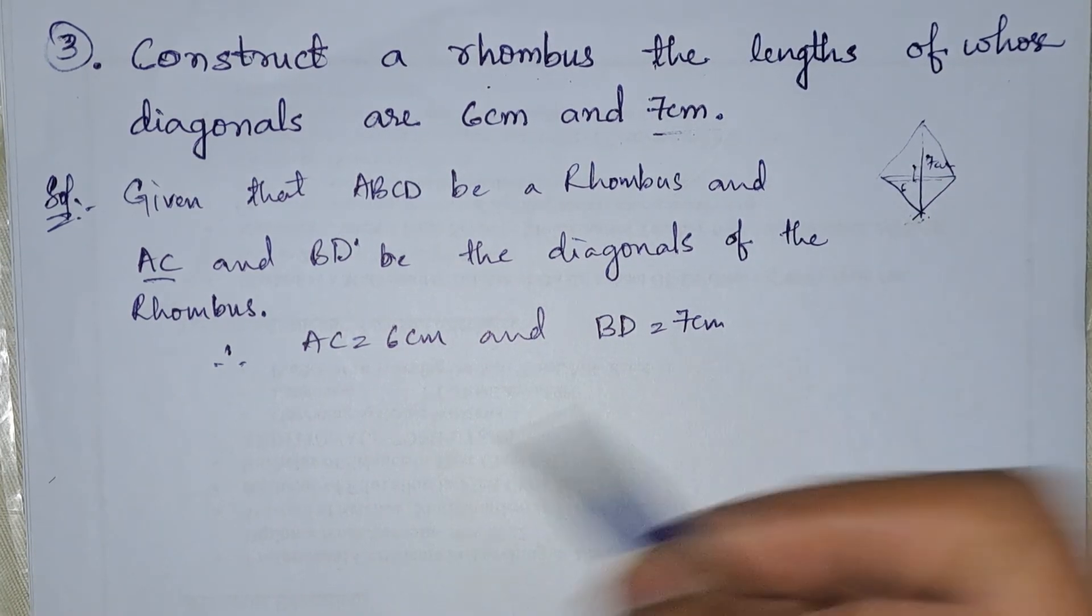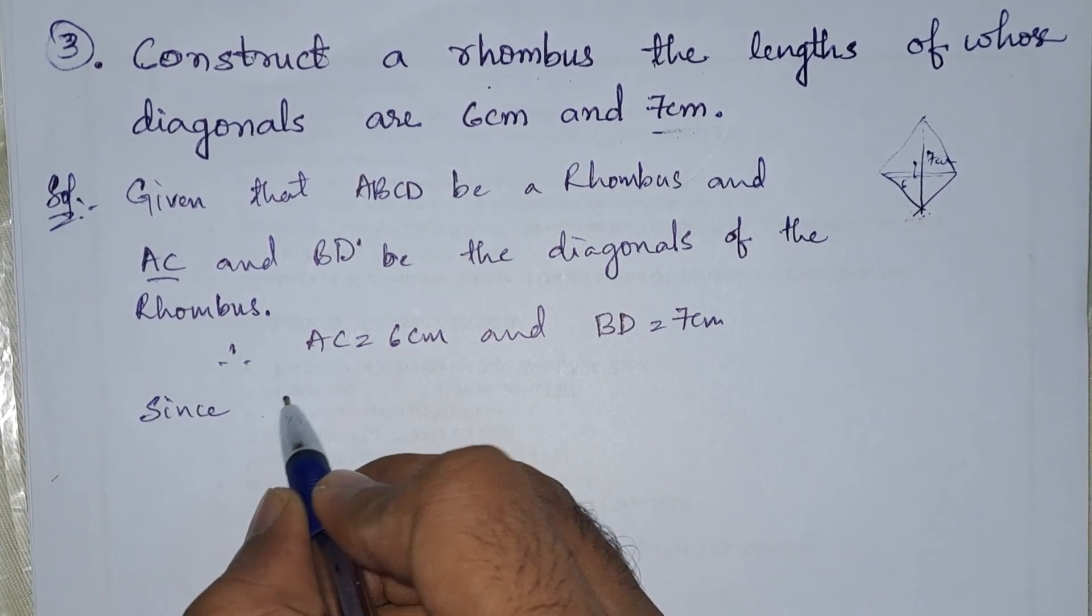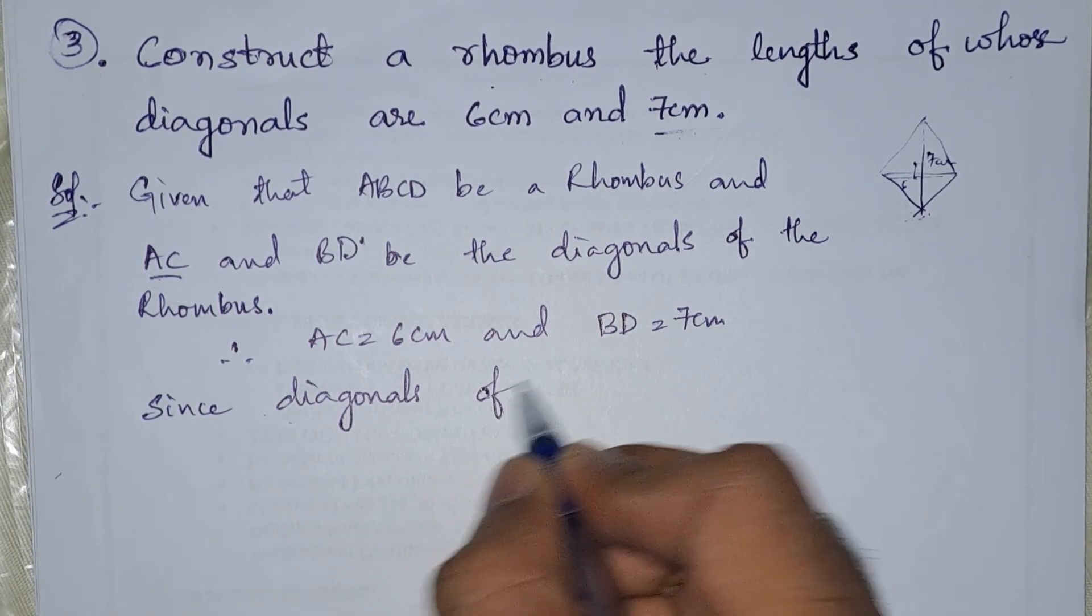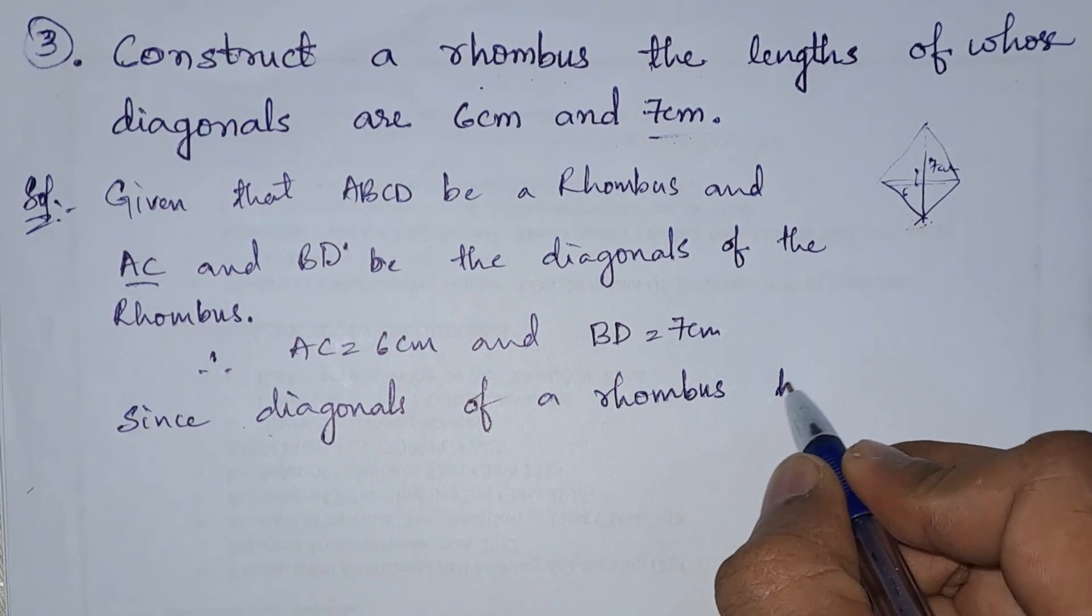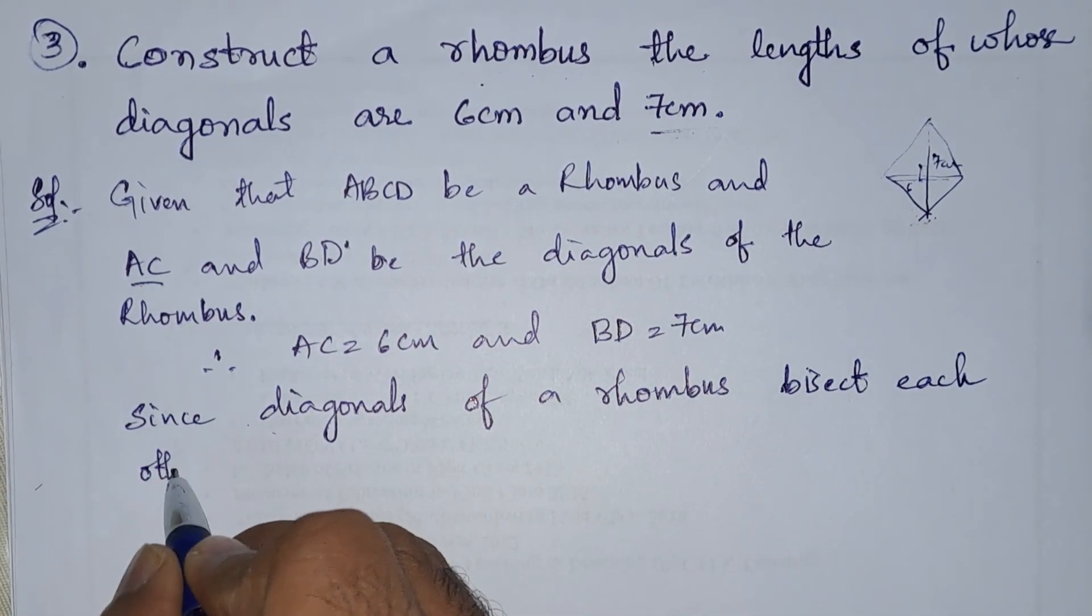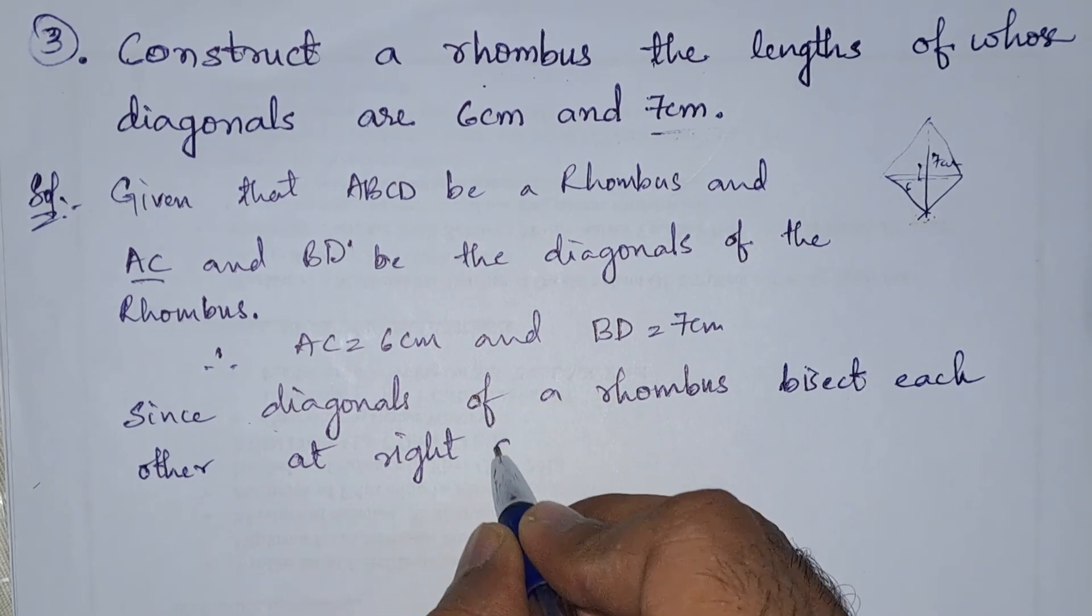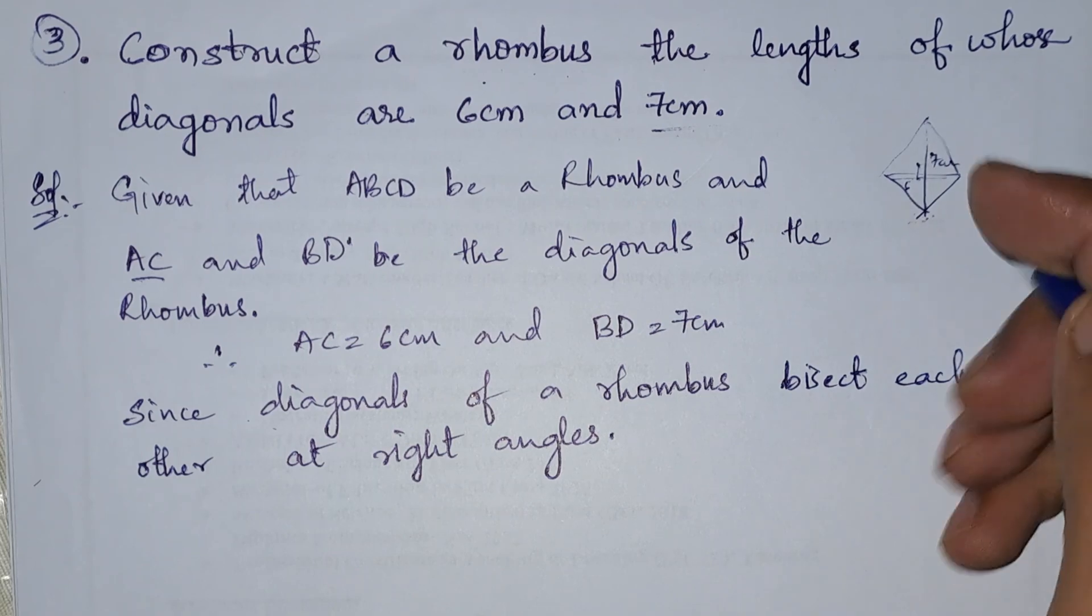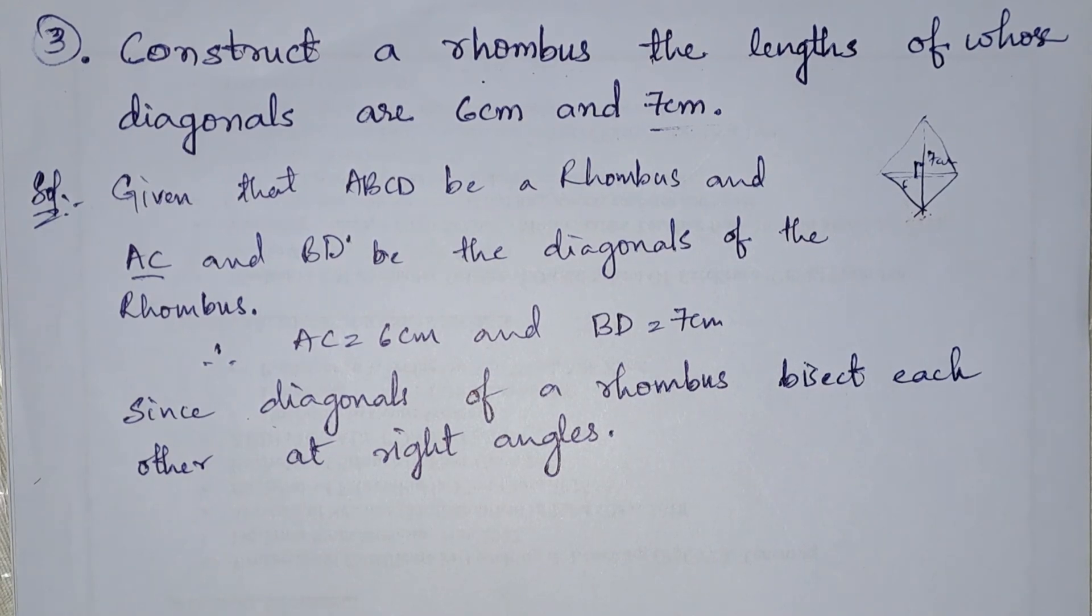We know that the diagonals of a rhombus bisect each other at right angles. So let us write that: since diagonals of a rhombus bisect each other at right angles, that means they will make a 90-degree angle when they intersect.